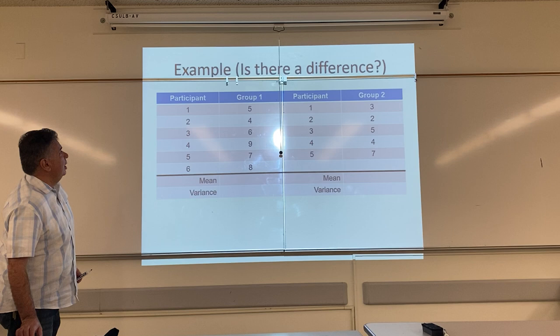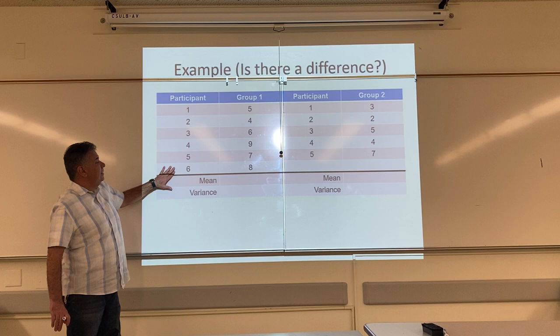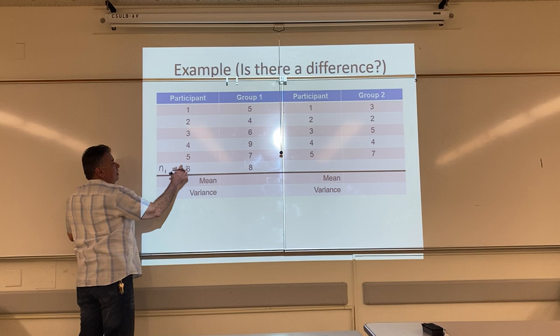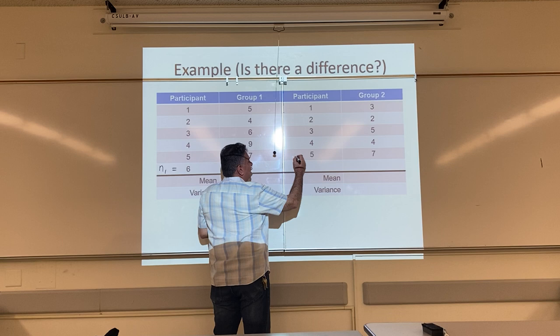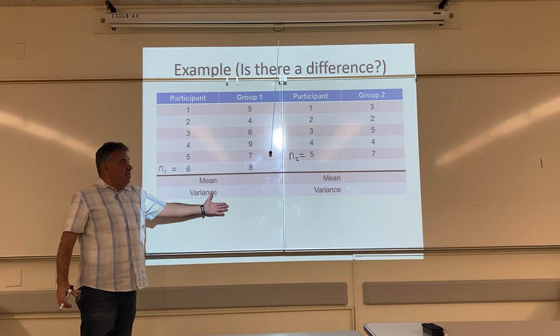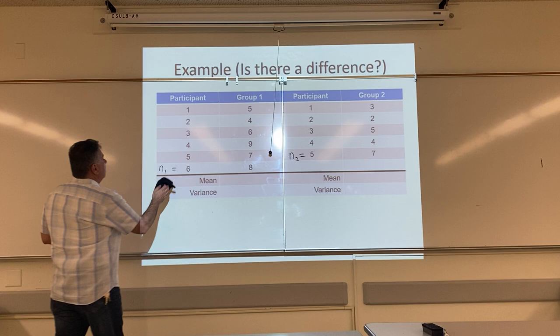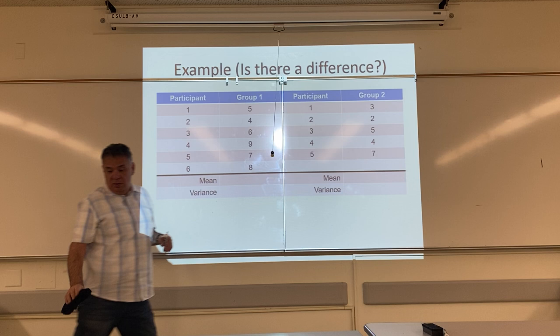Here I have two groups. My first group, group one, has six participants. So my sample size for group one is six. My second group has five participants. So my sample size for group two is five. I need to find the mean for each group. And then, once I find the mean, then I can find the variance. Next slide, let me show you.